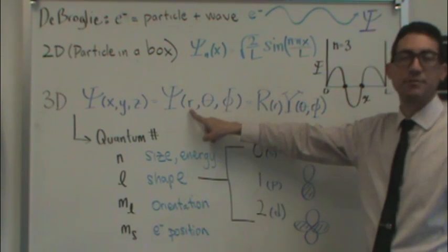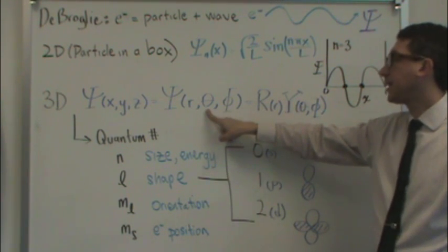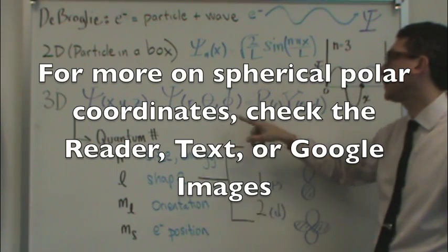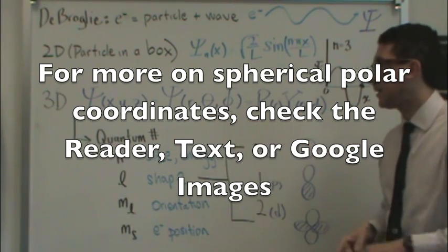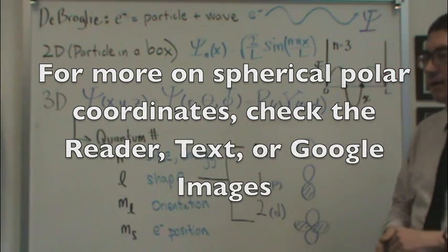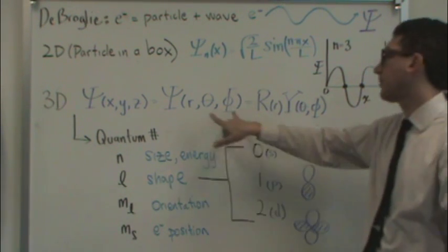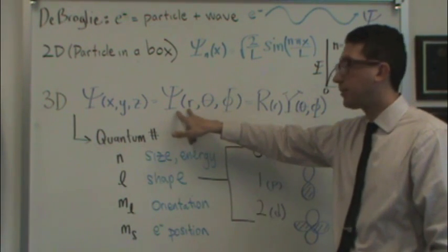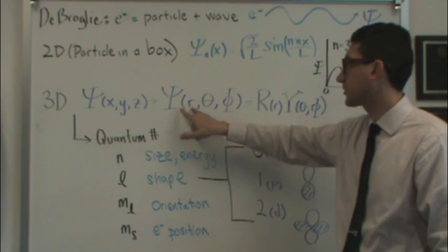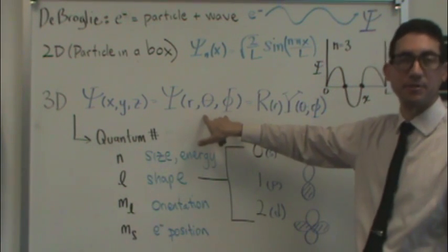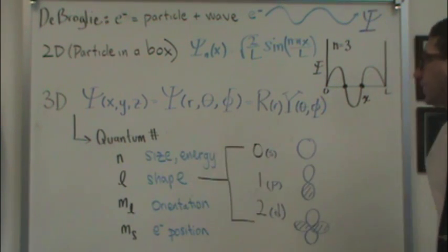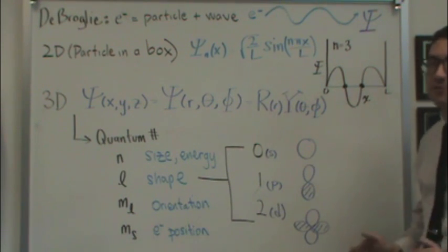R, distance from the origin. Theta, distance along the plane, or angle along the plane. And then phi, angle going kind of outside of the plane. So it turns out that mathematically, the r part of this function can be factored away from the angular part of this function.